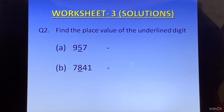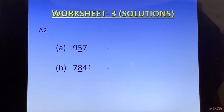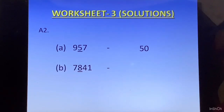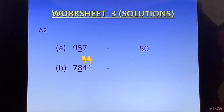Question 2: Find the place value of the underlined digit. For 957 with 5 underlined, we write 5 and whatever is on the right of it — that is 1 digit — and convert it to 0, giving us 50. For 78,41 with 8 underlined, we write 8 and the digits to its right, 4 and 1, converting those 2 digits to 0, giving a place value of 800.